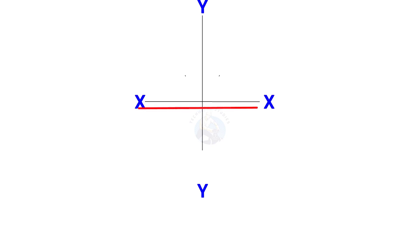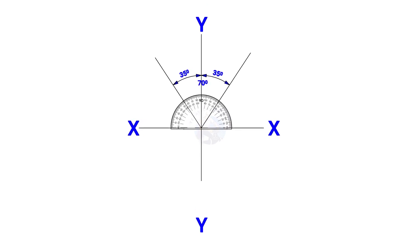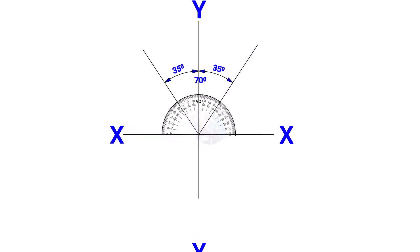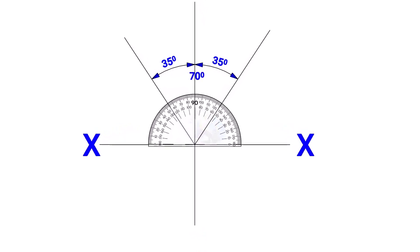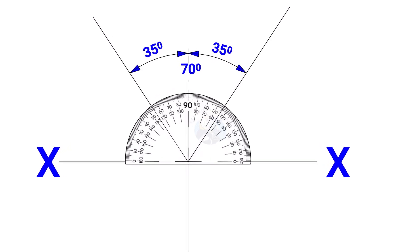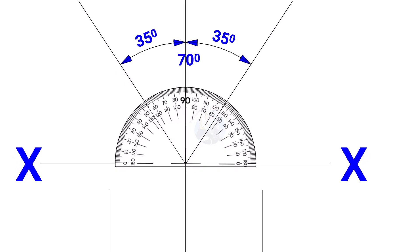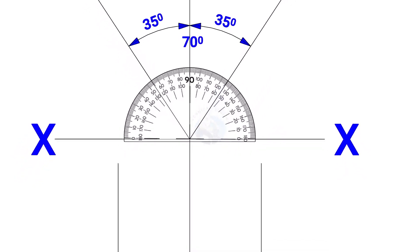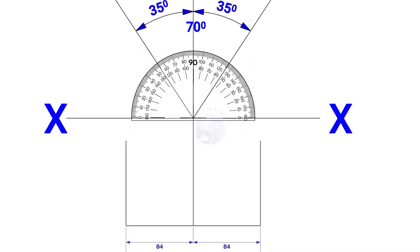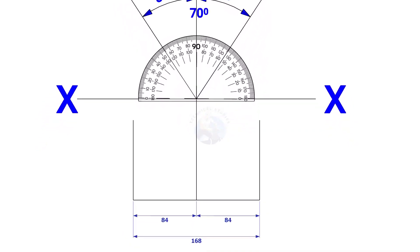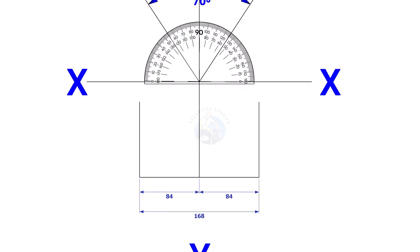Draw line XX and its perpendicular line YY. Since the included angle of the Y branch is 70 degrees, mark 35 degrees on both sides of the axis YY. Mark 84 millimeters each on both sides of the YY axis — that is the outside diameter of the header.